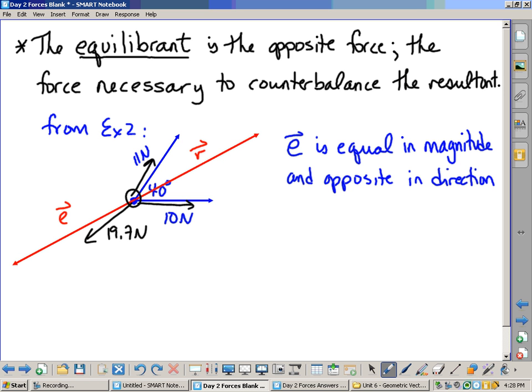And as a result, the boat itself would be standing still because the equilibrium would counterbalance the resultant. We end up with this new vector E.